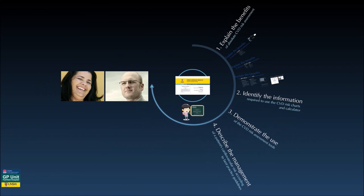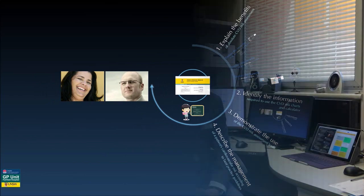Thank you for completing the video covering the first learning outcome, which is the longest in this activity. Please consider doing the self-directed activity and optional readings 2.1–2.4 in the activity sheet. The next video will cover the next two learning outcomes: identify the information required to use the cardiovascular disease risk charts and calculator, and demonstrate its use. I'll see you then.